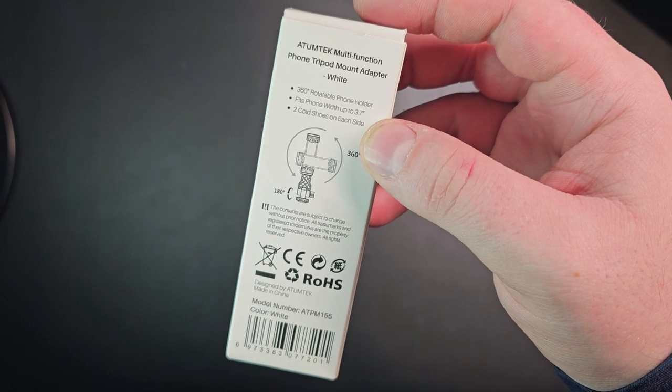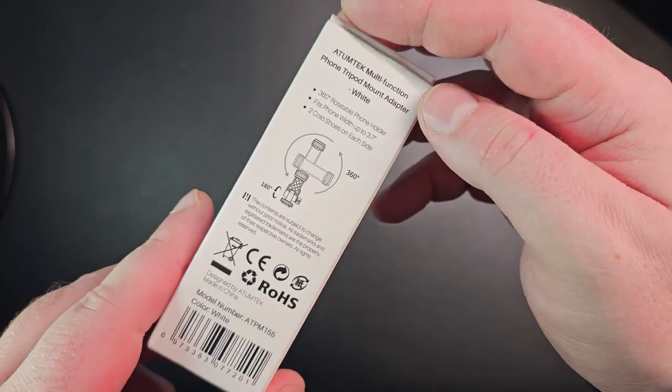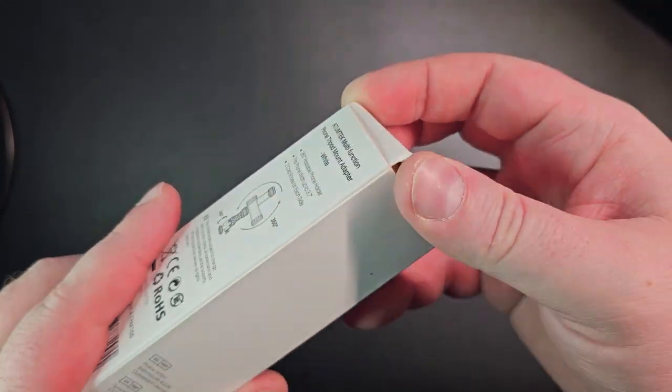Two cold shoes on each side, and the bottom as well rotates to 180, so let's see what's inside.